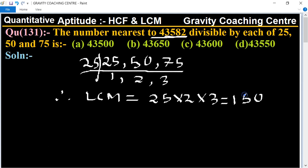So now we divide 43582 by 150 to find the nearest number. 43582 divided by 150.